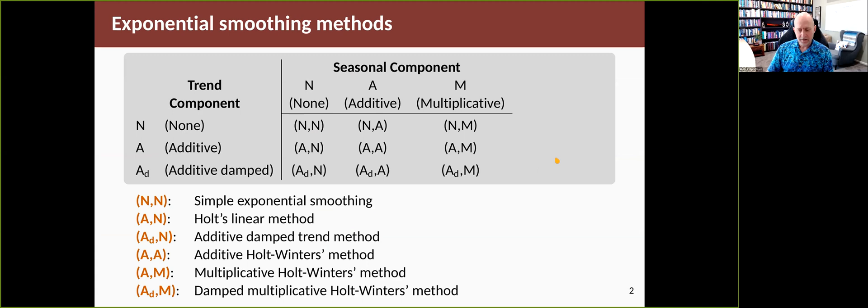We can summarize like this: we have methods that have no trend such as simple exponential smoothing methods, methods with additive trends such as Holt's linear method, and methods that have additive damped trend such as the damped trend method. We can also have damping in Holt-Winters as well. On the seasonal side we can have no seasonality, additive seasonality, or multiplicative seasonality.